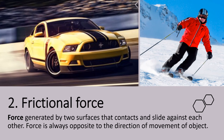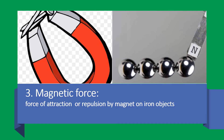The third type of force is magnetic force. You would have played with a magnet and seen that when you bring it near iron pieces like nails or ball bearings, they attract each other and the nails attach to the magnet. Magnetic force is a force of attraction or repulsion by a magnet on iron objects.